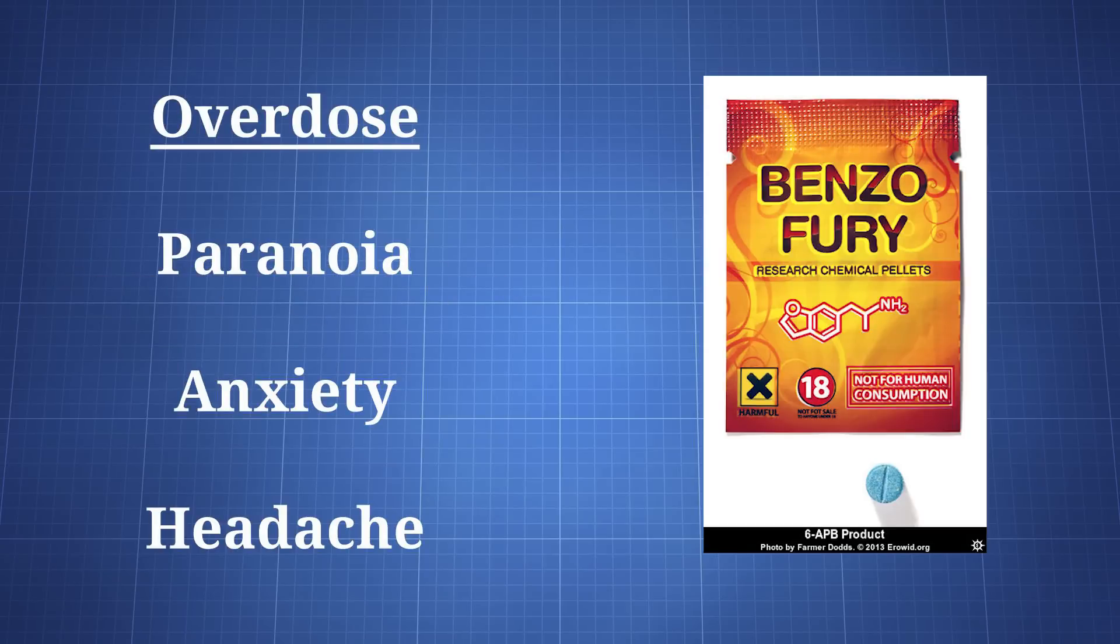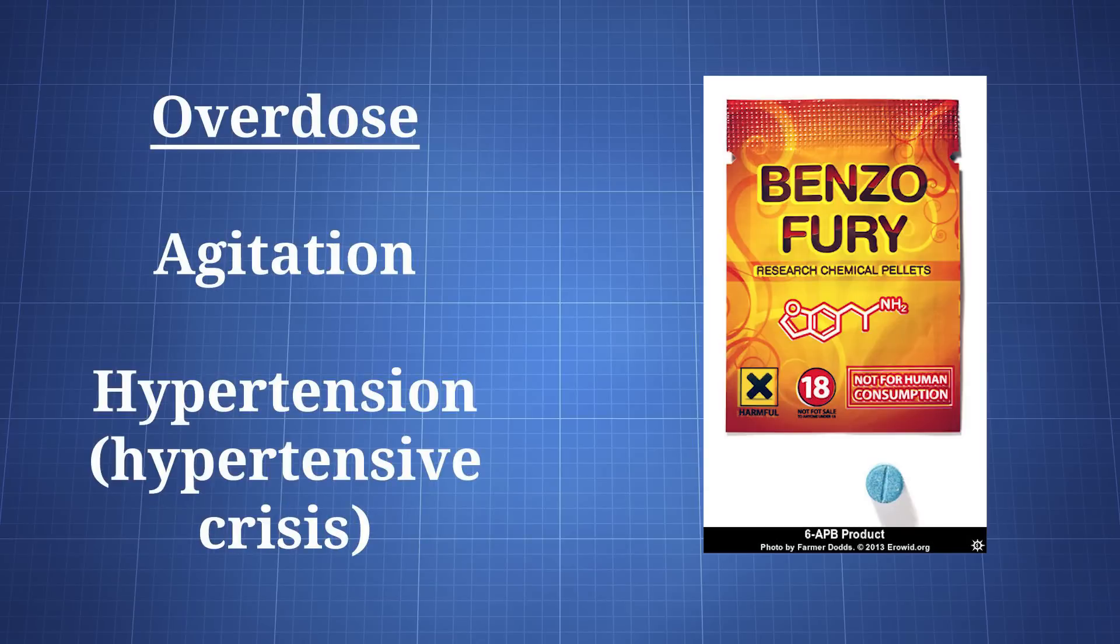Acute overdoses can come with paranoia, anxiety, headache, agitation, and hypertension capable of leading to hypertensive crisis.